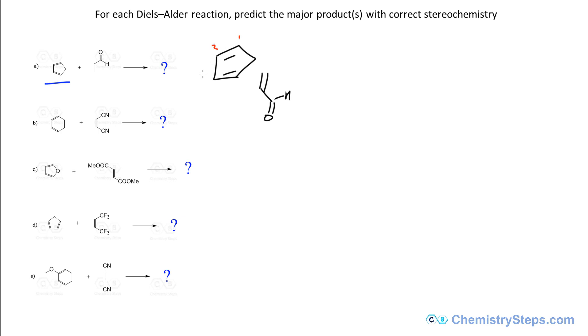This will be carbon number 1, 2, 3, 4 and 5. And here we can say carbon A and B. Now let's draw the mechanism. First we're going to break these bonds and make a new bond here between carbon number 1 and carbon B. After this we're going to make a new bond between carbon number 4 and carbon A. And finally, move this here making a new pi bond.